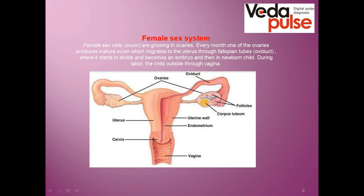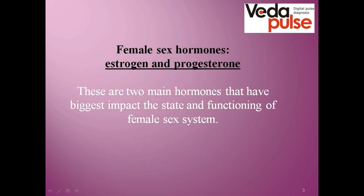The ovum is produced each month and after that is released from the ovary into the peritoneal cavity. The cilia of the fimbriae sweep the ovum into the fallopian tube. Then the fertilized ovum is implanted in the uterus, where all conditions are created for normal development of the fetus. There are two main hormones produced by the endocrine system: estrogen and progesterone. They not only influence the female sex system but also determine her life state, mood, and behavior.